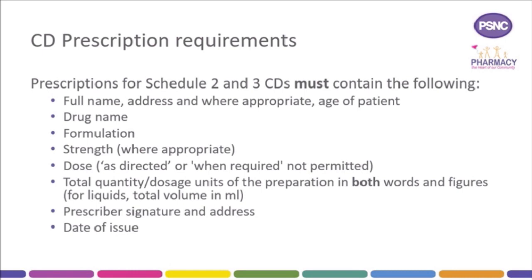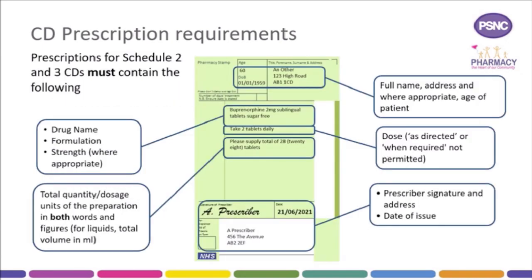A pharmacist is not allowed to dispense a prescription for a Schedule 2 or 3 CD unless all the information required by law is included on the prescription. Prescriptions for Schedule 2 and 3 CDs must contain the following: full name, address and where appropriate age of patient; drug name, formulation, strength where appropriate; dose — 'as directed' or 'when required' are not permitted; total quantity in dosage units of the preparation in both words and figures; for liquids, total volume in millilitres. The prescription must be handwritten in indelible ink and may be computer generated, except for the prescriber's signature which must be handwritten unless the prescription is issued via EPS.